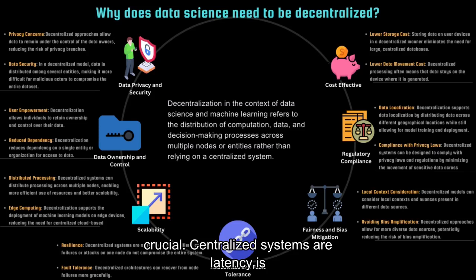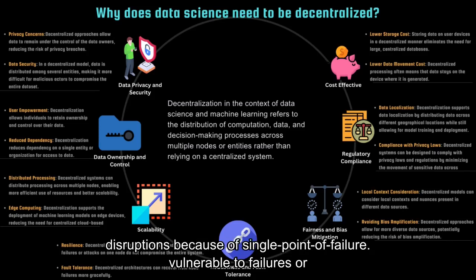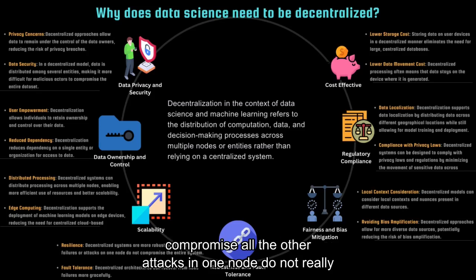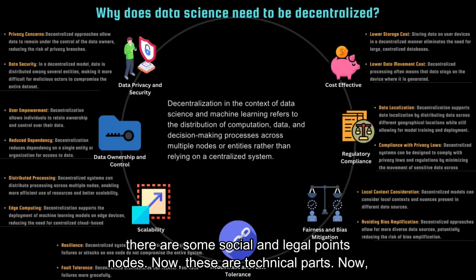Centralized systems are vulnerable to failures or disruptions because of a single point of failure. Decentralized systems are more robust and resilient, as failures or attacks in one node do not compromise all the other nodes. Now, these are the technical points. There are also some social and legal points as well.